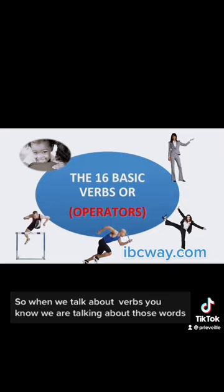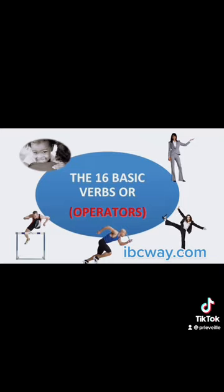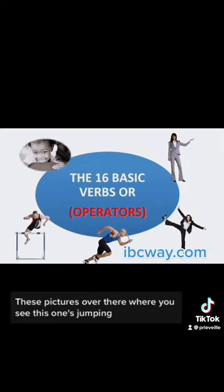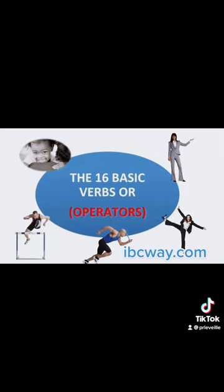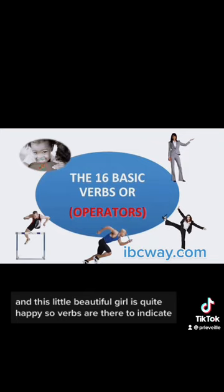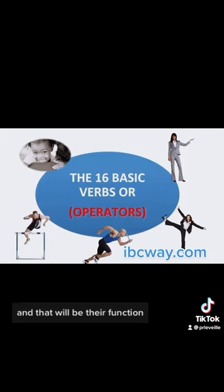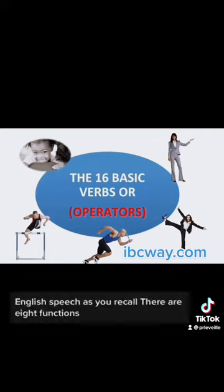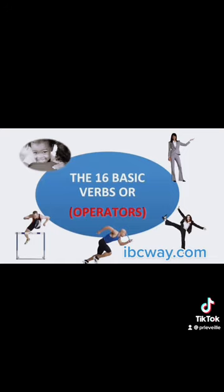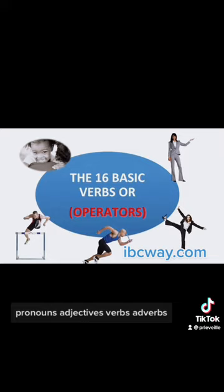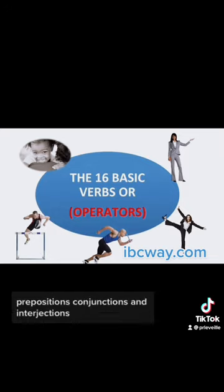When we talk about verbs, we're talking about words in sentences that indicate action or state. You can see the pictures here — someone jumping, someone running, someone elated and extremely happy, someone indicating or showing something. Verbs indicate actions and states in a sentence, and that is one of the eight functions of words in English: nouns, pronouns, adjectives, verbs, adverbs, prepositions, conjunctions, and interjections.